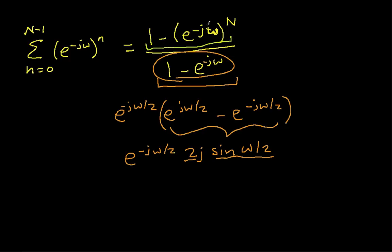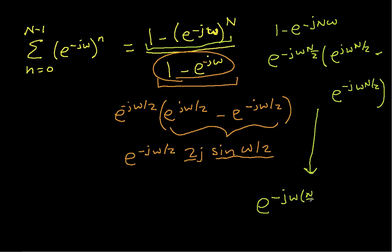We'll do the same thing for this term up here, where we will write this as 1 - e^(-jNω). And then we'll factor out an e^(-jωN/2). We're essentially doing up here what we did down here, except now we've got a jNω where we had a jω before. So we write this as e^(jωN/2) - e^(-jωN/2). And we discover quickly then that this is equal to e^(-jωN/2) times 2j sin(ωN/2).